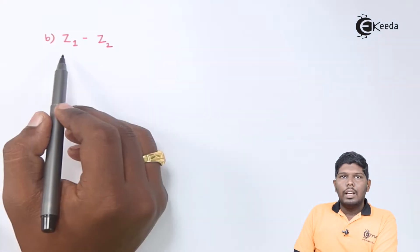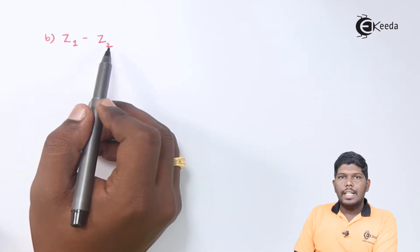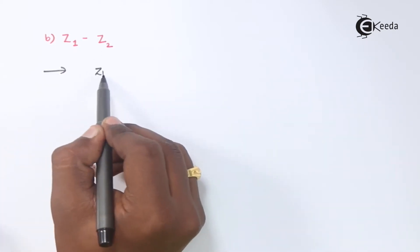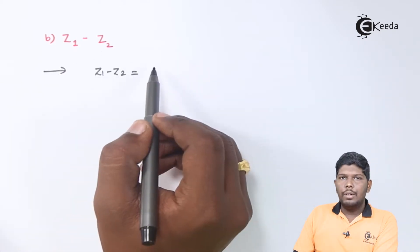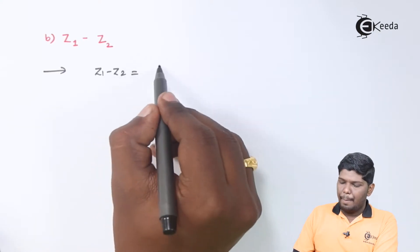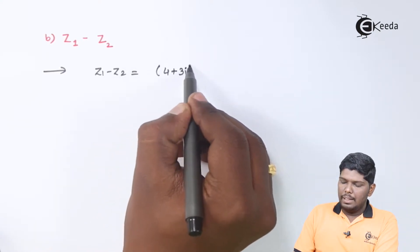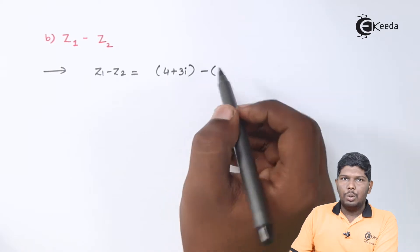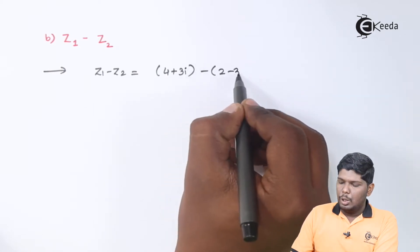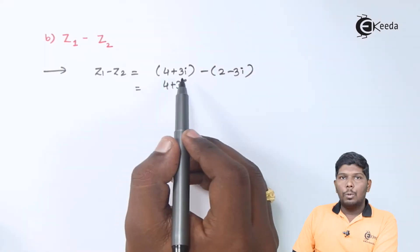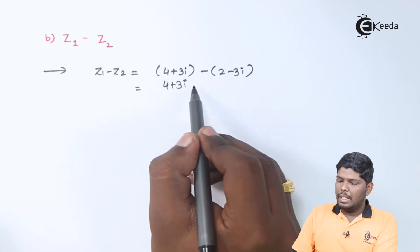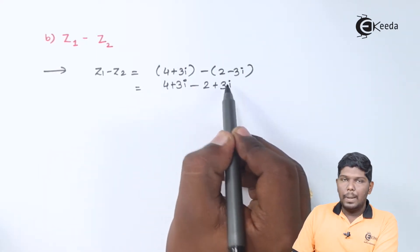Now, let us see the second problem. In second problem, we need to find z1 minus z2. The value of z1 is 4 plus 3i and z2 is 2 minus 3i. On opening this bracket, we will get 4 plus 3i minus 2 plus 3i.